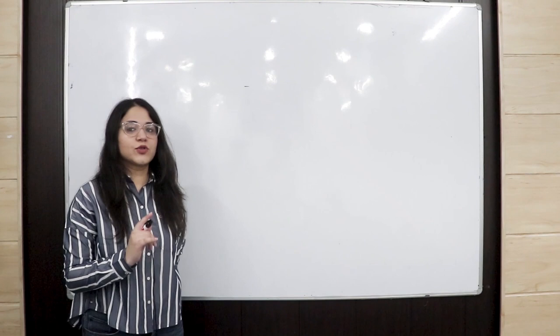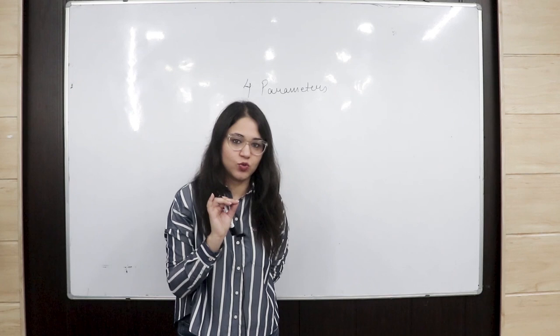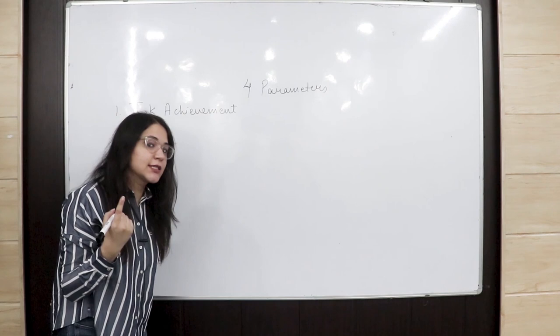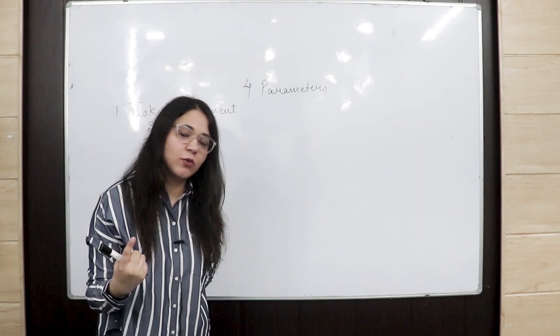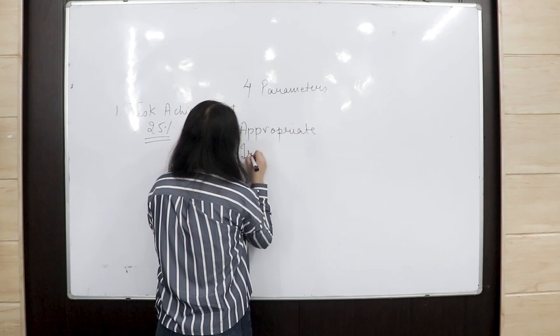There are four parameters on which we are given bands in Writing Task 2. The first parameter is Task Achievement. Task achievement is how you attempt the task — it has 25% weightage in your score. This includes ensuring that your ideas are appropriate, relevant, and on topic.